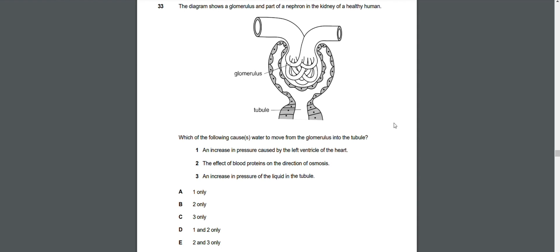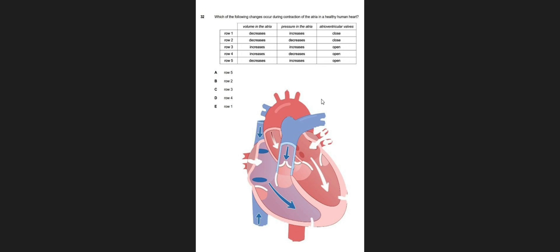Question 32: Which of the following changes occurred during contraction of the atria in a healthy human heart? The answer is row 5. The volume of the blood in the atria will decrease because it will empty the blood from the atrium into the ventricle. The volume of the blood will decrease, and even the volume of the atria will also decrease because the way it contracts is like when you squeeze a balloon - the volume of it will decrease.